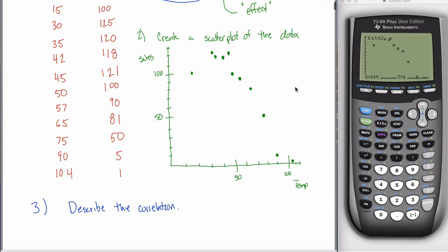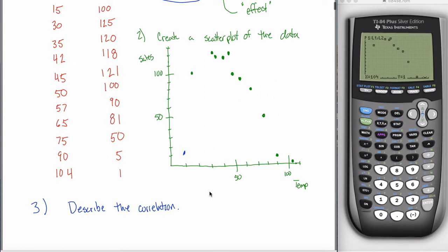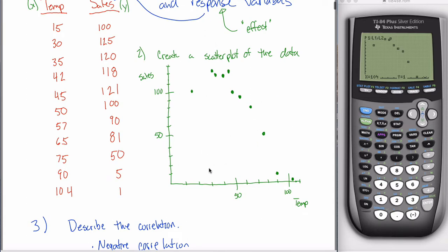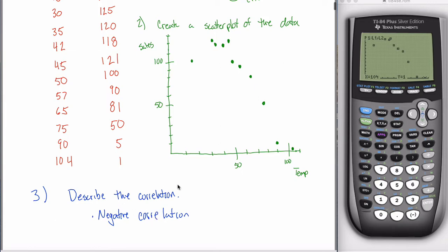Conversely, if going to the right the dots tended to get higher, you'd have positive correlation. If the dots are just a scatter with no tendency to go up or down when read from left to right, you describe it as no correlation. So negative, positive, or no correlation is what we're looking for in terms of direction.